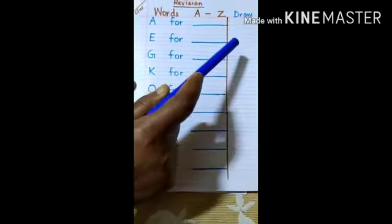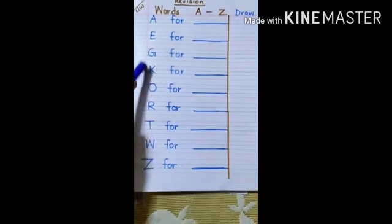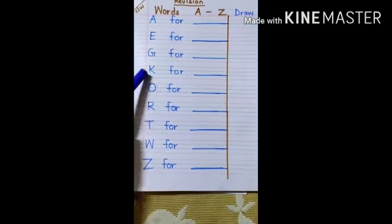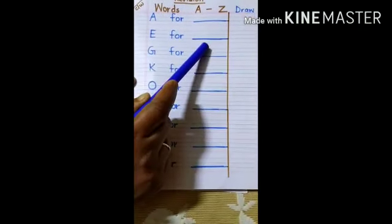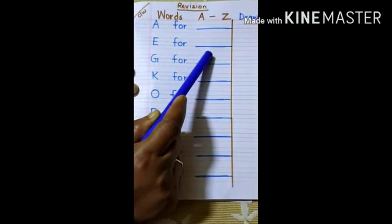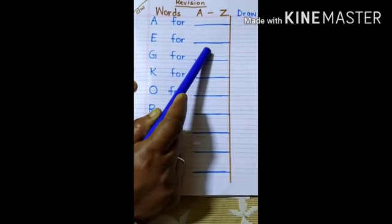It is you who has to do the writings. Everything you have to do children. E for, E for egg. Yes. E double G, egg.